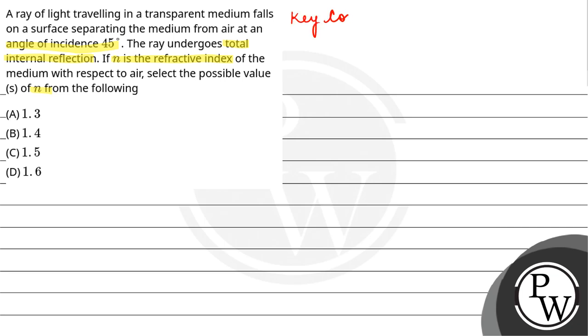So here our key concept is, for total internal reflection, the basic condition is that angle of incidence must be more than critical angle. And critical angle is equal to sin inverse 1 by mu.